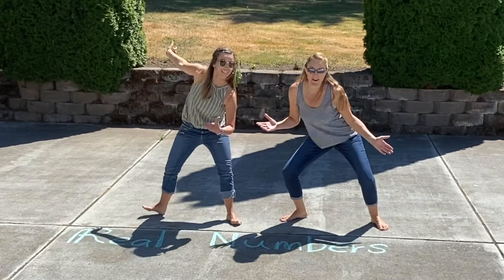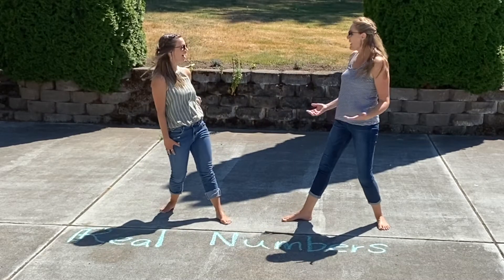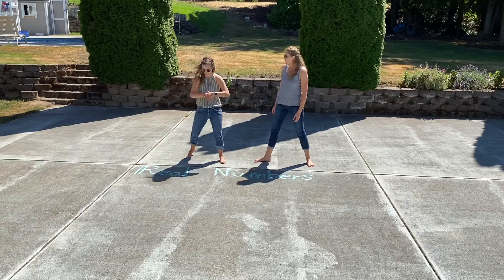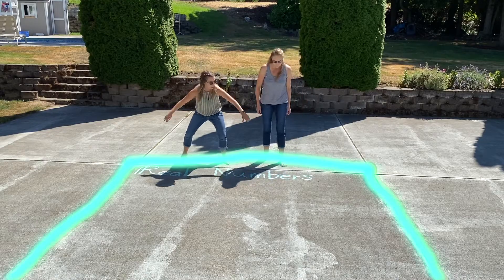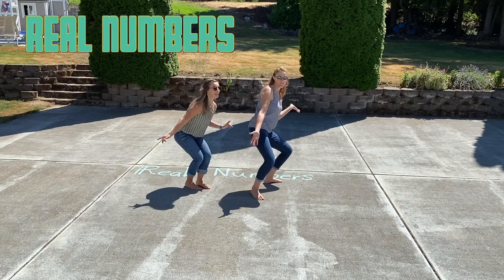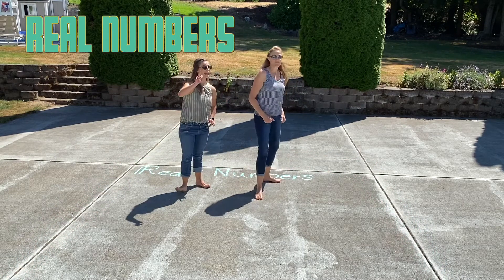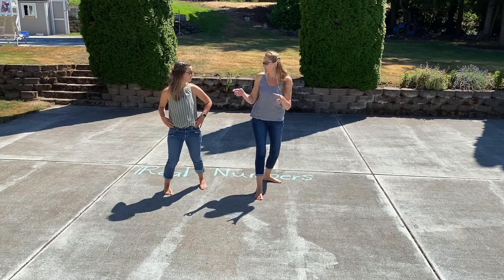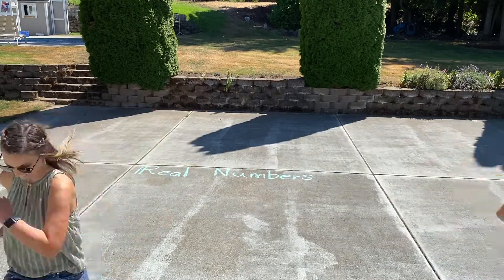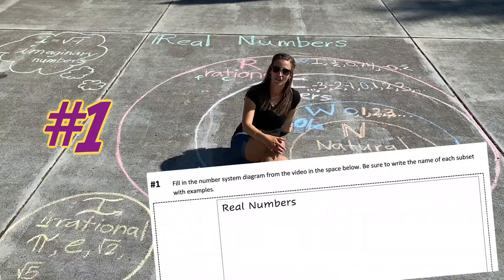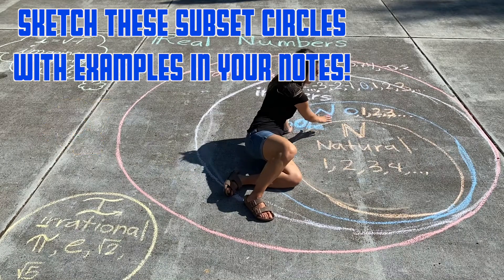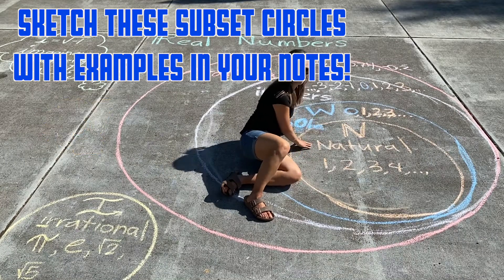Real numbers! Why don't we look at the subsets of real numbers? So let's pretend this box here is our real numbers, or our real number land. So that means we need to start with the smallest subset. Let's go! Subsets of real numbers — let's start with the smallest subset. This one's called the natural numbers.